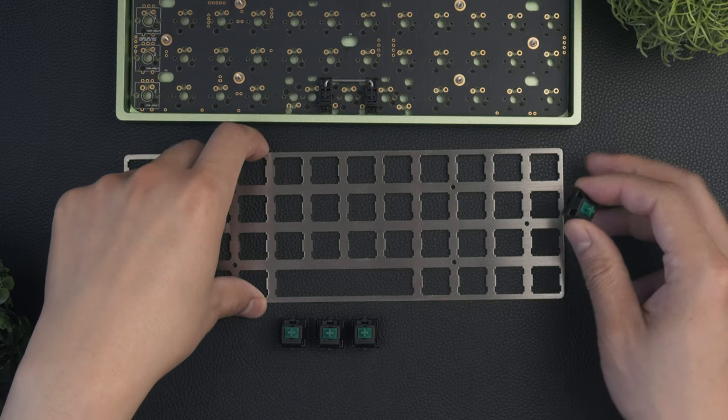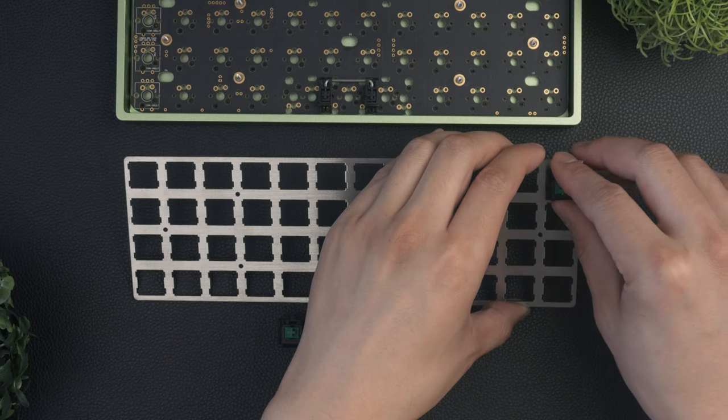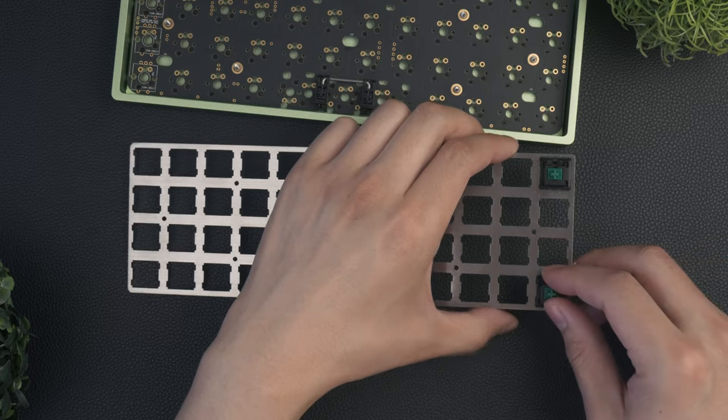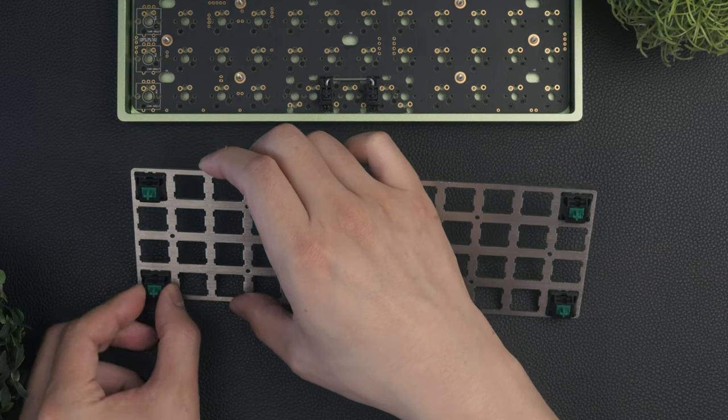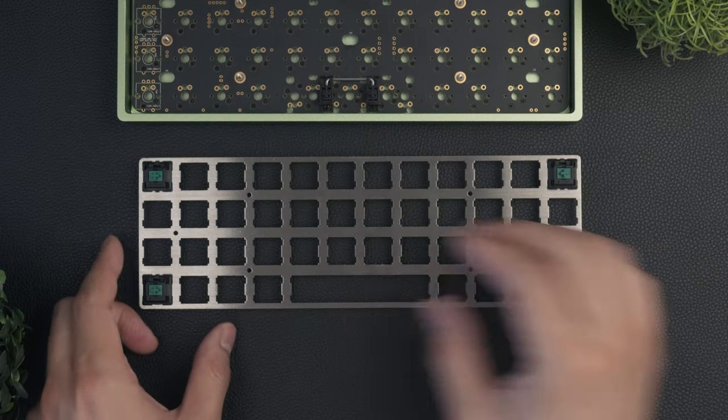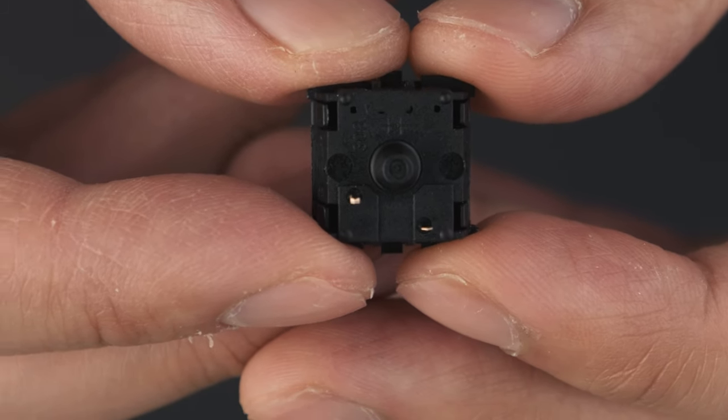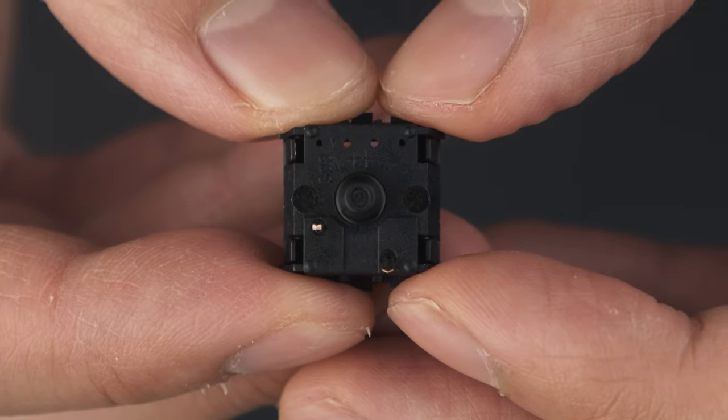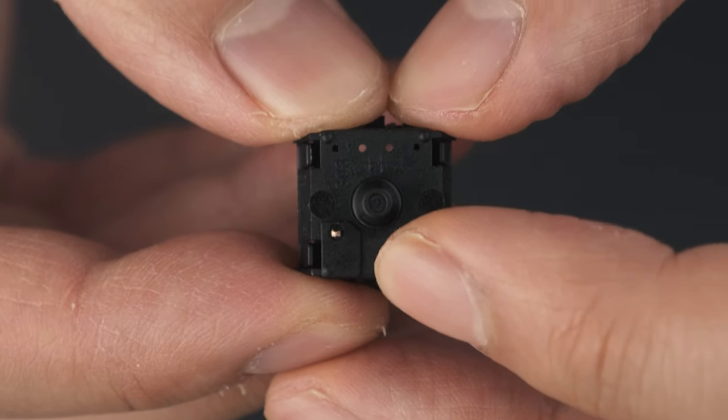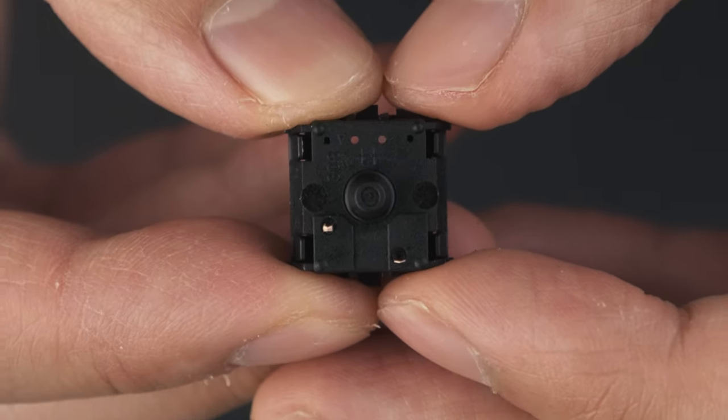Now, grab the top plate with the spacebar cutout towards you. We'll add switches to the 4 corners. This will help align the circuit board and prevent damage. Before placing each switch, you want to check the underside and see if the pins are straight. If they are bent, you can use your fingers to straighten them, but it's best to use another one instead.